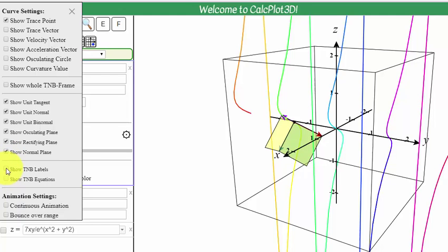I can also have labels shown. Now we have the tangent, normal, and binormal. Now they're labeled with T, N, and B. I can also look at the equations. Those will show on the upper left part of the screen. Now I see the equation for the tangent, normal, and the binormal.